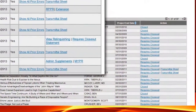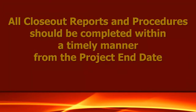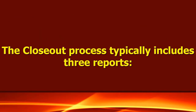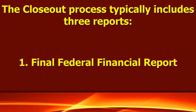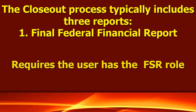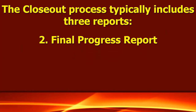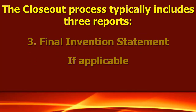Regardless of the role, the Requires Closeout link appears in the Action column. By policy, all closeout reports and procedures should be completed in a timely manner after the project end date. The closeout process typically includes completing three reports: Final Federal Financial Report — completing this report requires the user have the FSR role — Final Progress Report, and Final Invention Statement, if applicable for the type of award.